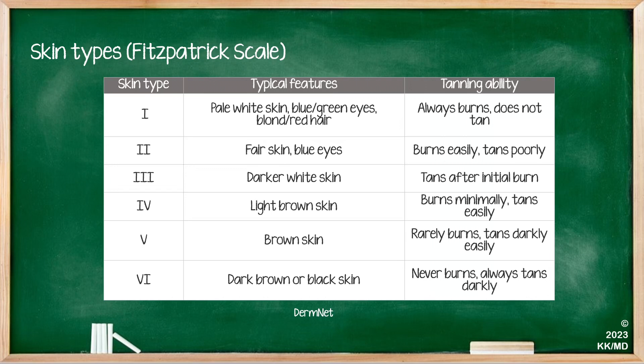Skin type one is pale white skin, normally with blue or green eyes and blonde or red hair. What's important to know is the burning and tanning characteristics of each type. Skin type one always burns and does not tan. Skin type two has fairer skin and frequently blue eyes — these burn easily and tan poorly. Skin type three is normally darker but still has white skin; they can tan but will initially burn. Skin type four is light brown skin which burns minimally but tans easily. Skin type five is brown skin which rarely burns but tans darkly quite easily.